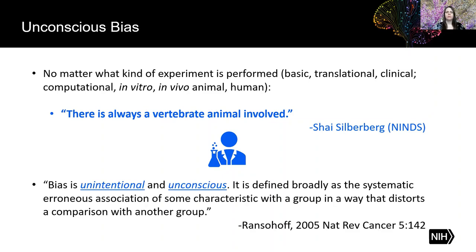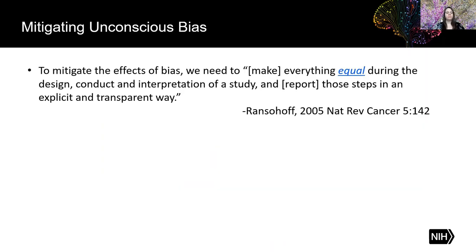According to this review paper, bias is unintentional and unconscious. It is defined broadly as the systematic, erroneous association of some characteristics with a group in a way that distorts a comparison with another group. From the same review, they suggest that to mitigate the effects of bias, we need to make everything equal during the design, conduct, and interpretation of the study, as well as report those steps in an explicit and transparent way.